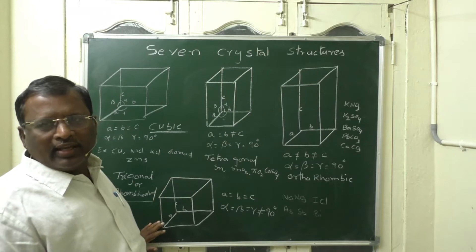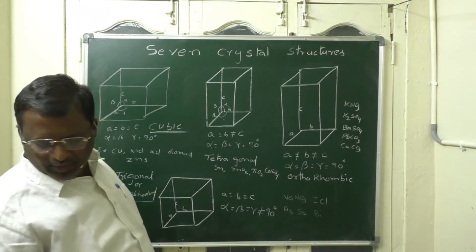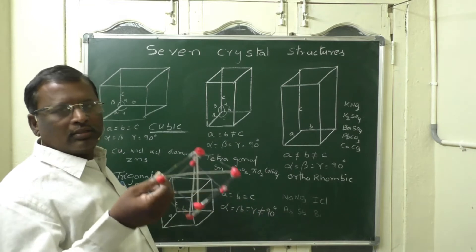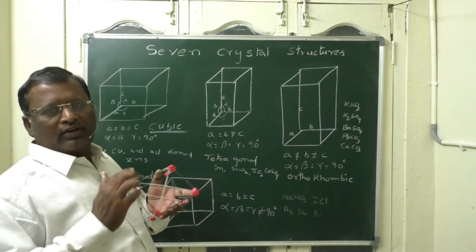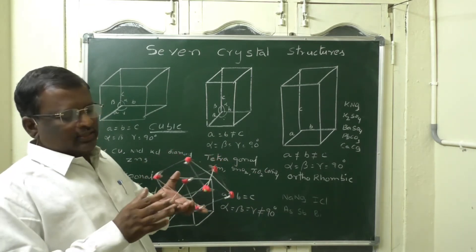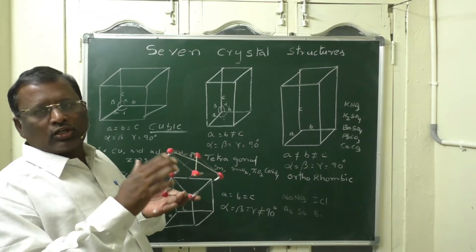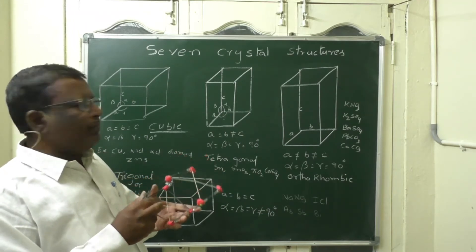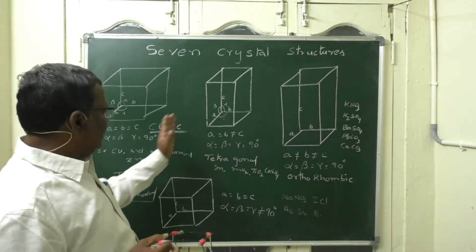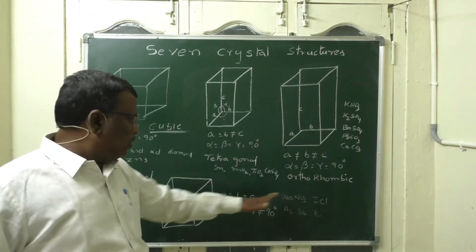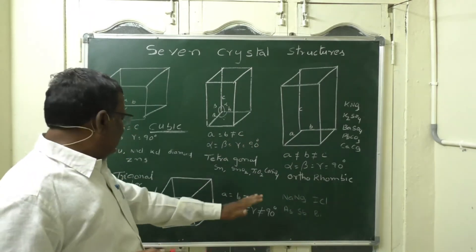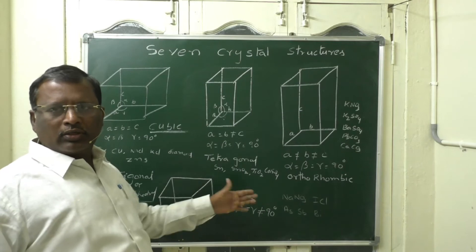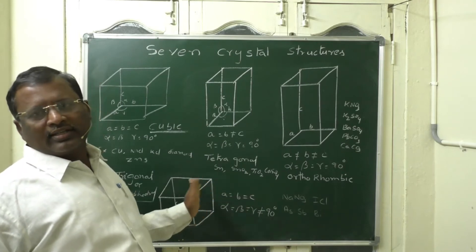Trigonal is also known as rhombohedral — because the shape of any face is like a rhombus. So you can remember it as C, T, O, T or C, T, O, R — where the last letter stands for trigonal or rhombohedral, whichever is convenient for you.